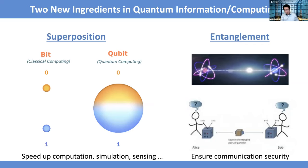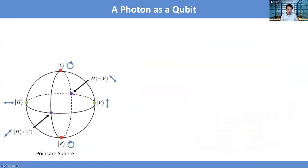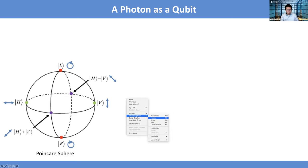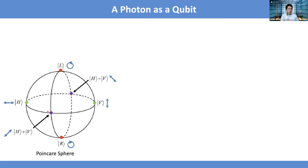Sometimes people will say spin, sometimes superconducting qubits, and so on. If people have learned something about optics, probably one easy way to understand a qubit is to think of it as a single photon. A single photon may have different polarizations — horizontal, vertical, left circular, right circular, off-diagonal, or diagonal. There are all these possible different polarizations a photon may have.